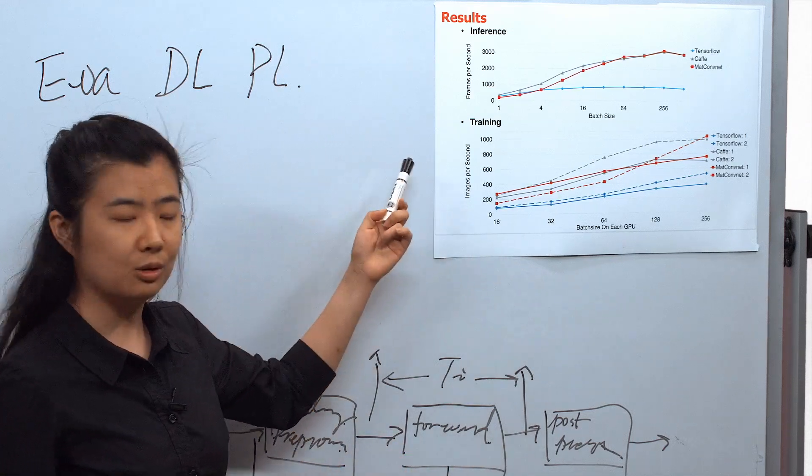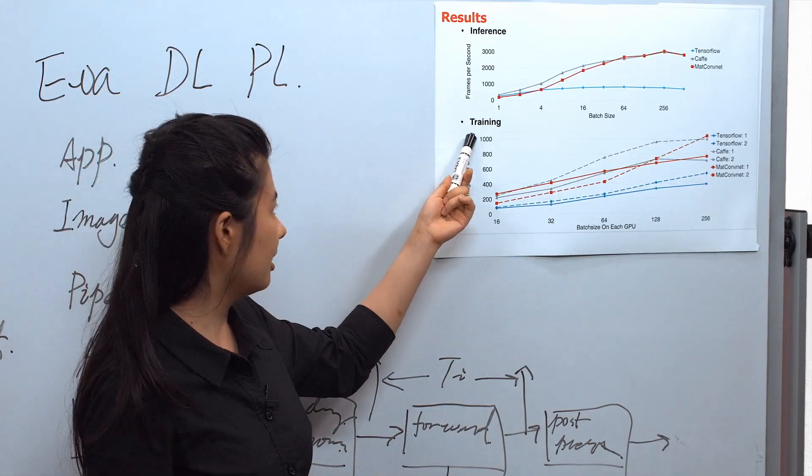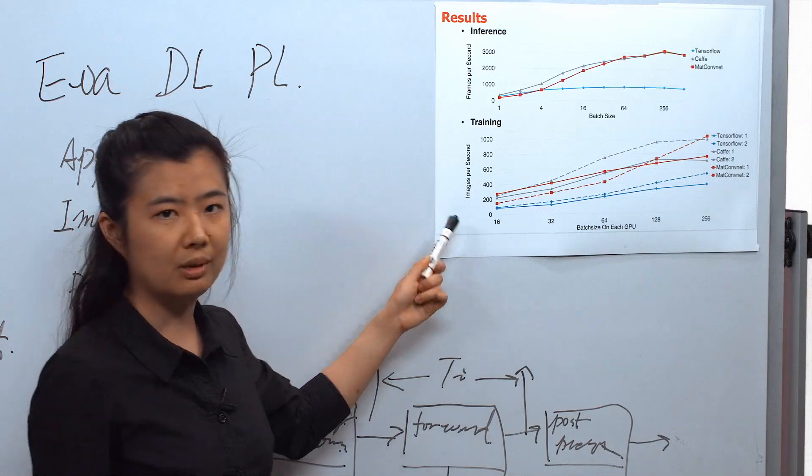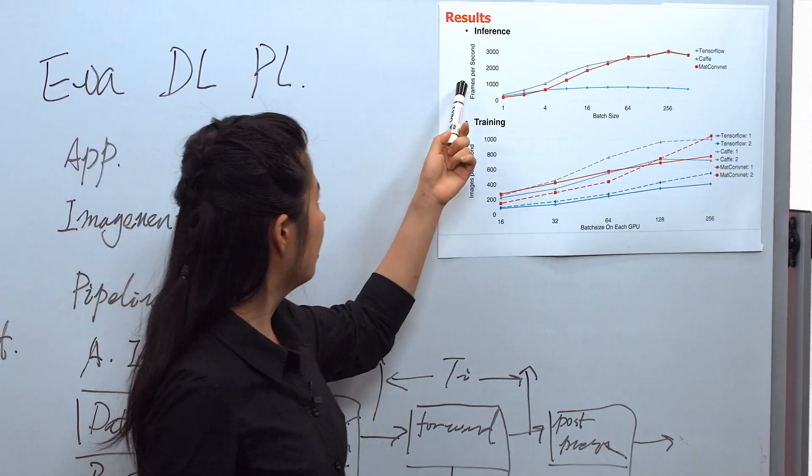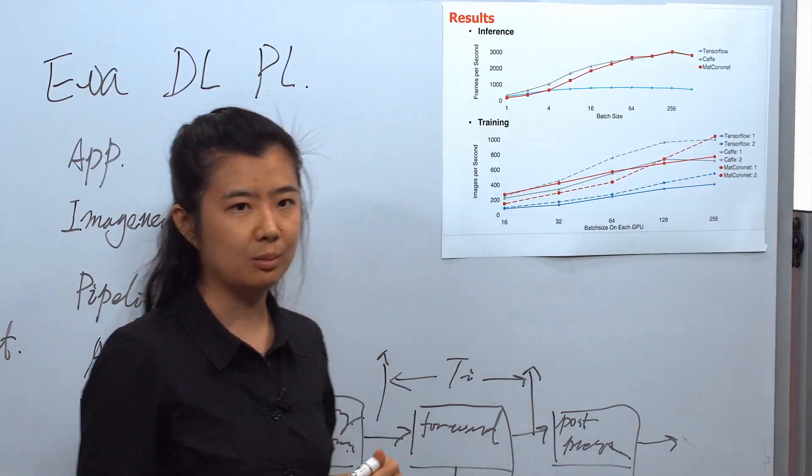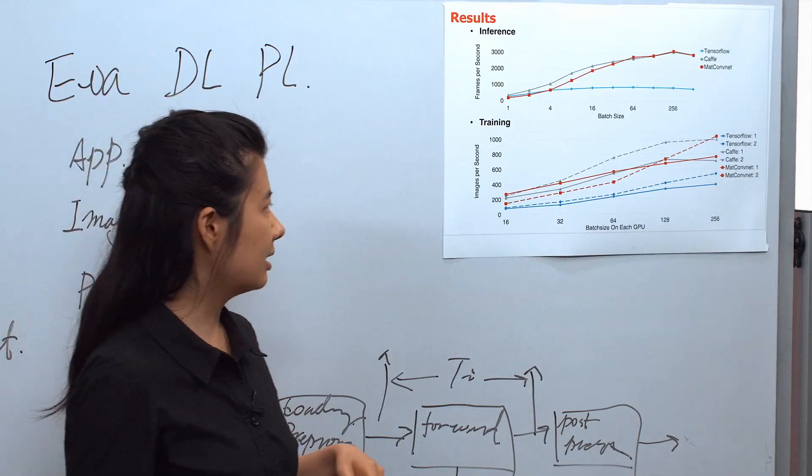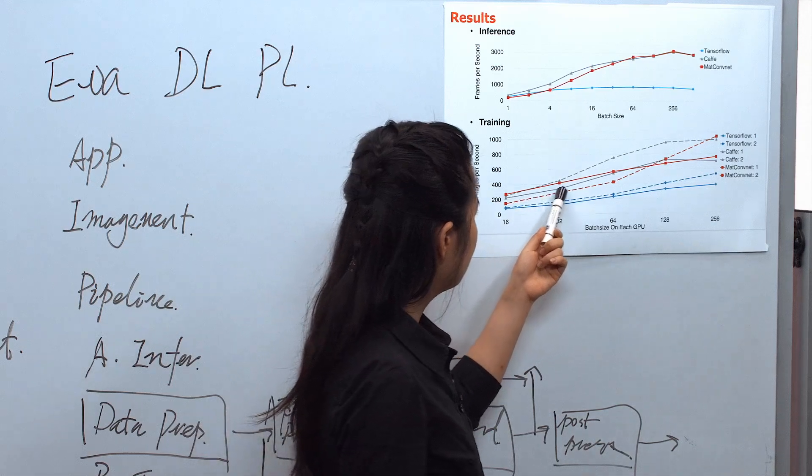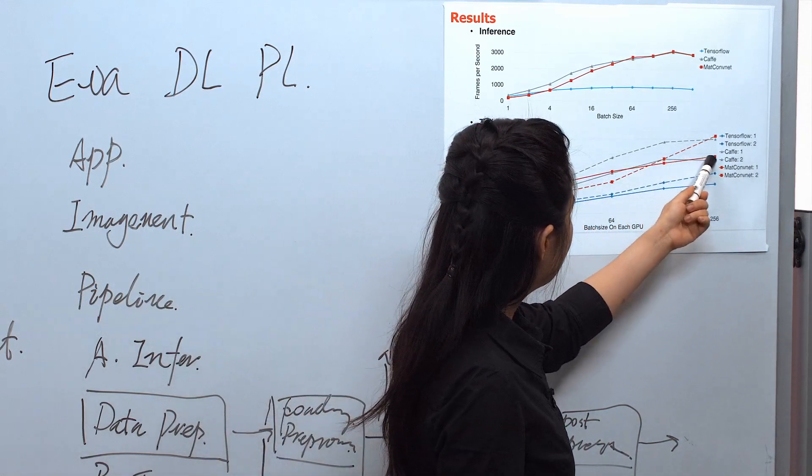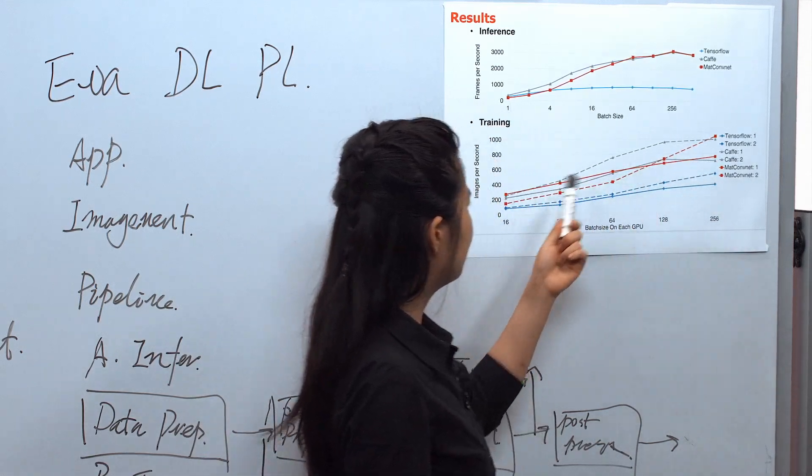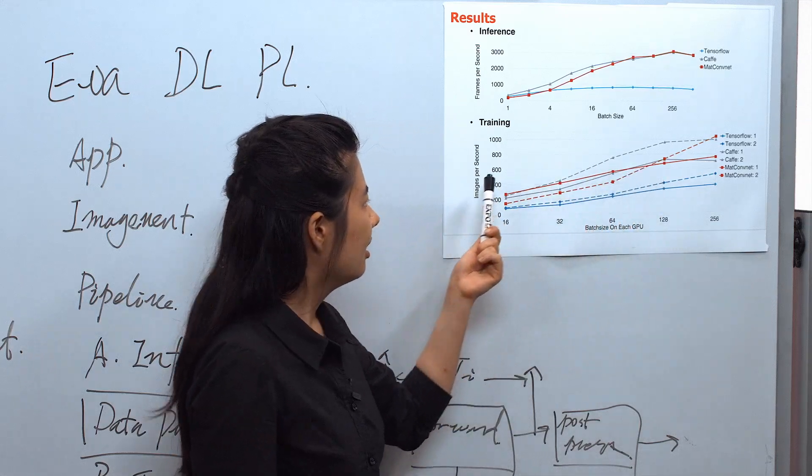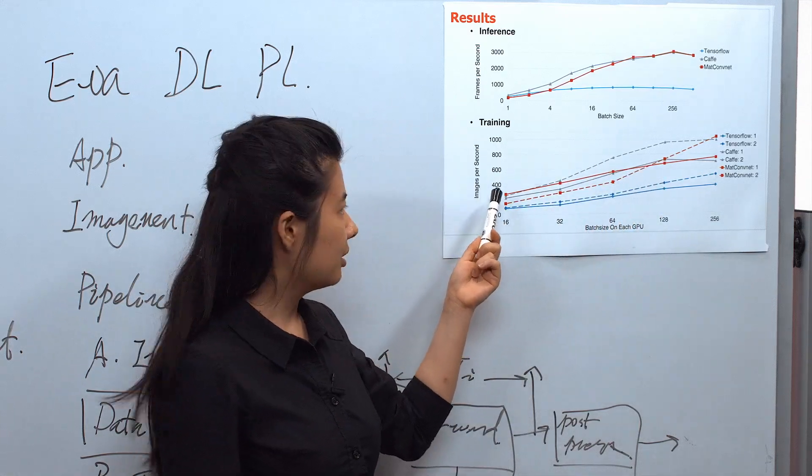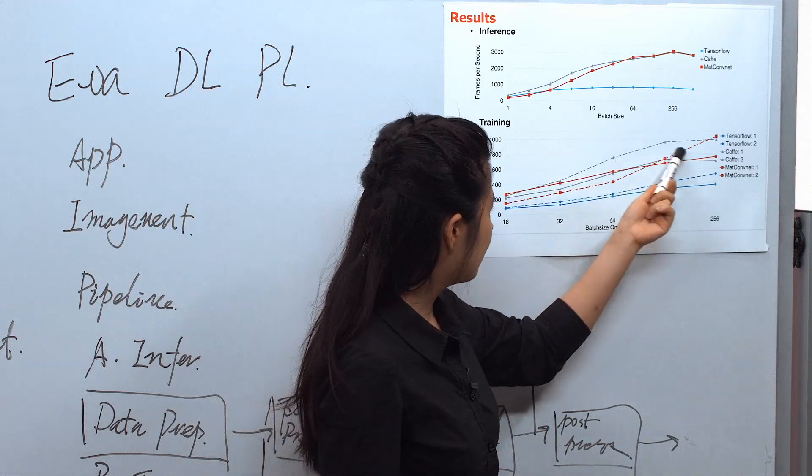Next is the training result. It looks much more complex than the inference because we add more GPUs. We tested on single GPU. The performance of single GPU is shown in the solid lines, and the result for two GPUs is on the dash lines.